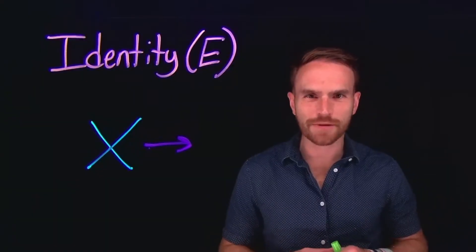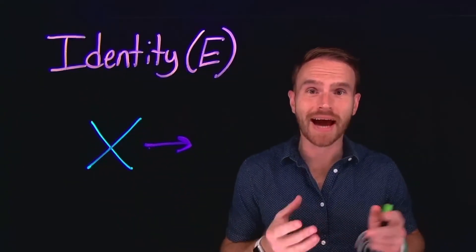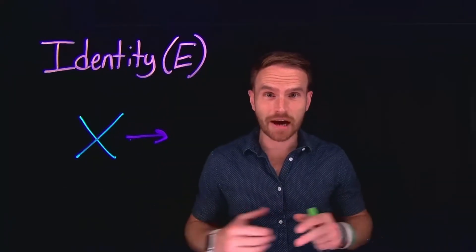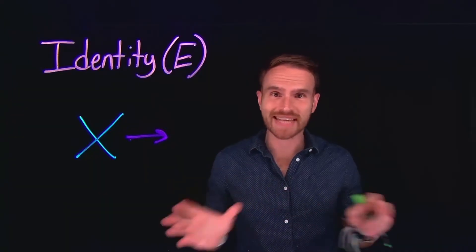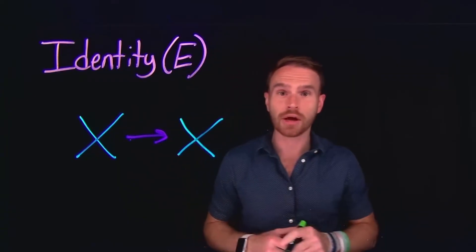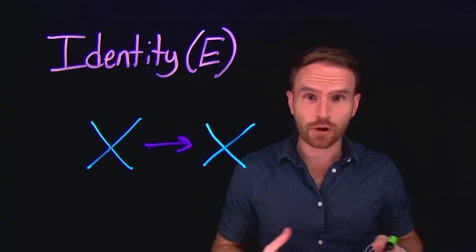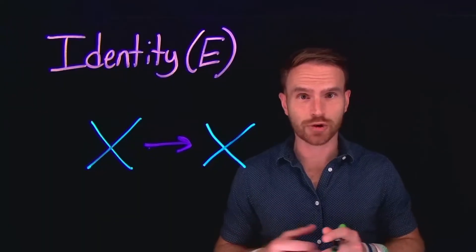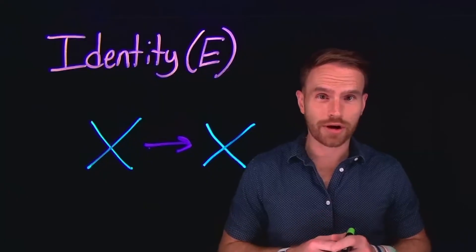Let's walk through all of the different symmetry operations you can expect to see in this class. The first, and easiest to understand, is the identity operation, which is given the symbol capital E. The identity operation involves doing nothing to the molecule — picking it up and placing it back down in the exact same orientation. This is like the default operation that every single molecule or object in the universe contains. While it might seem trivial, the identity operation is actually a really important operation for group theory.